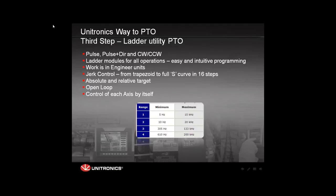An important thing to know about the PTO is that it controls movement in an open loop — there is no feedback from the movement. If you tell the motor to move a hundred steps, you don't know if it actually did. You can only tell it what to do but get no feedback back. To perform closed-loop functionality, you need to use external devices; the PTO itself does not do that.